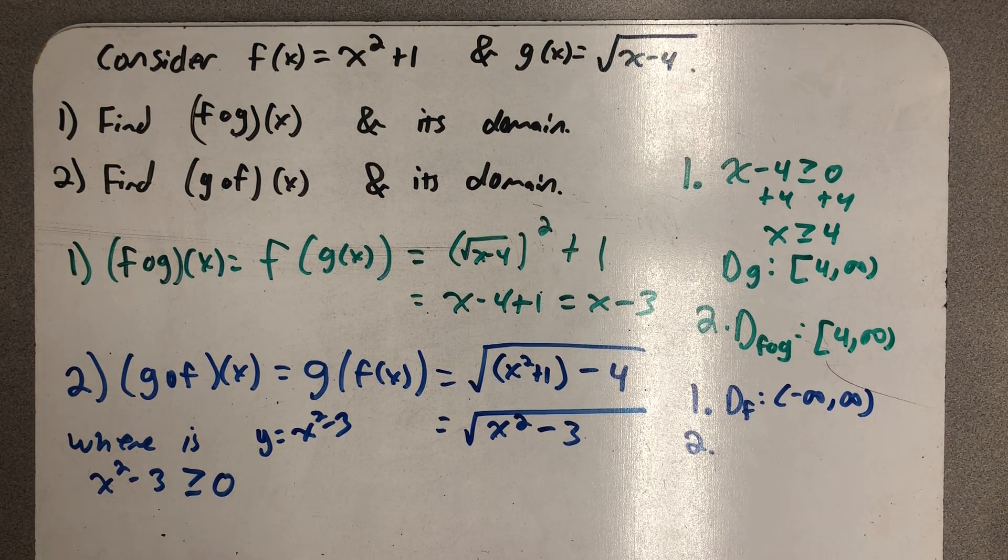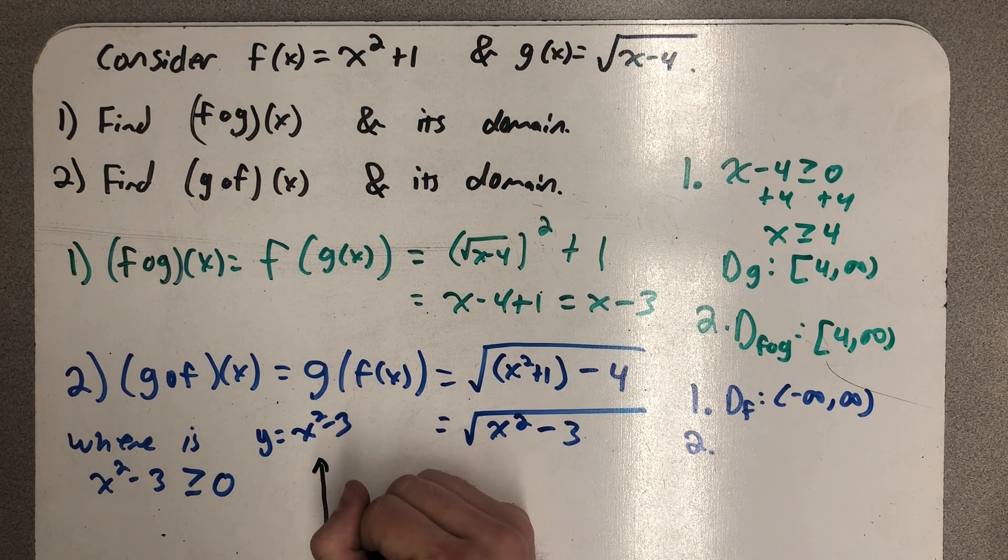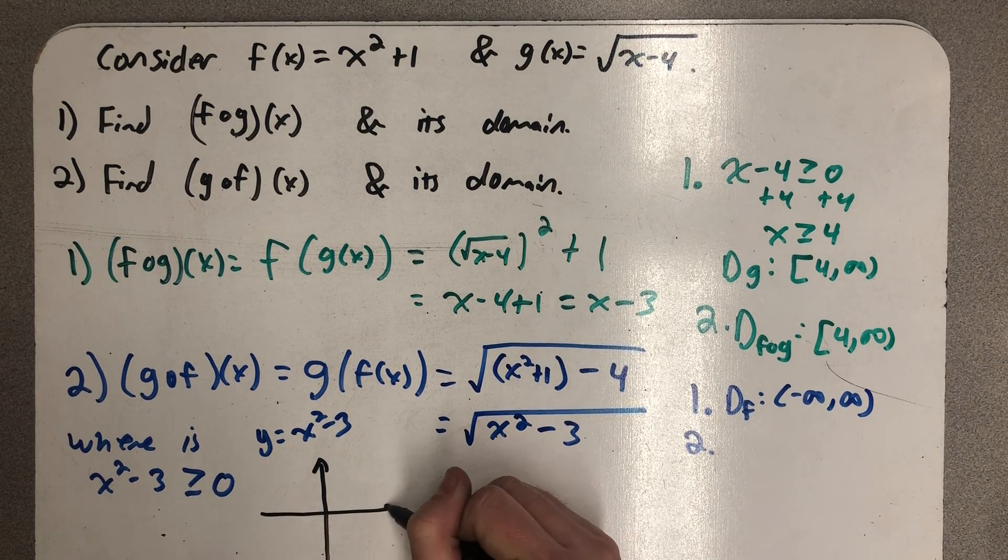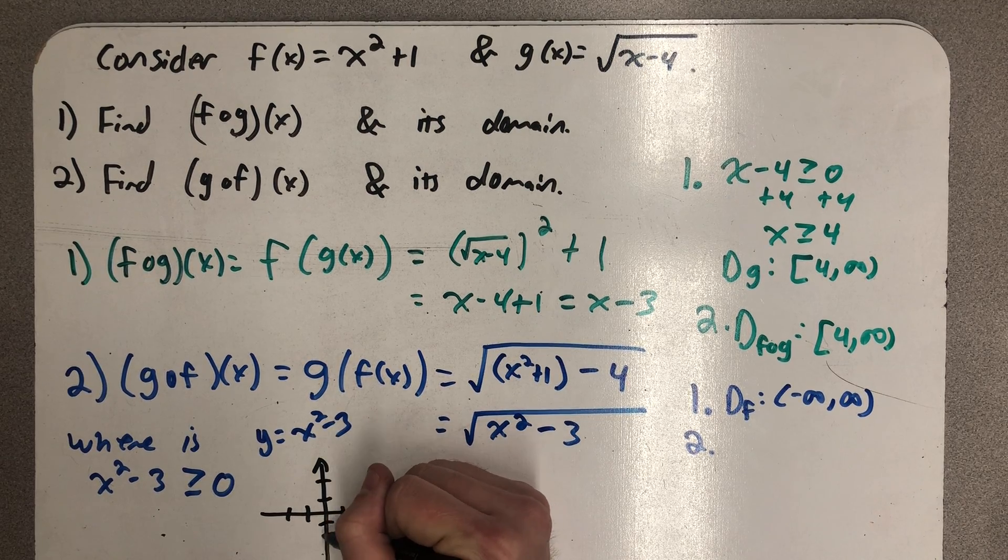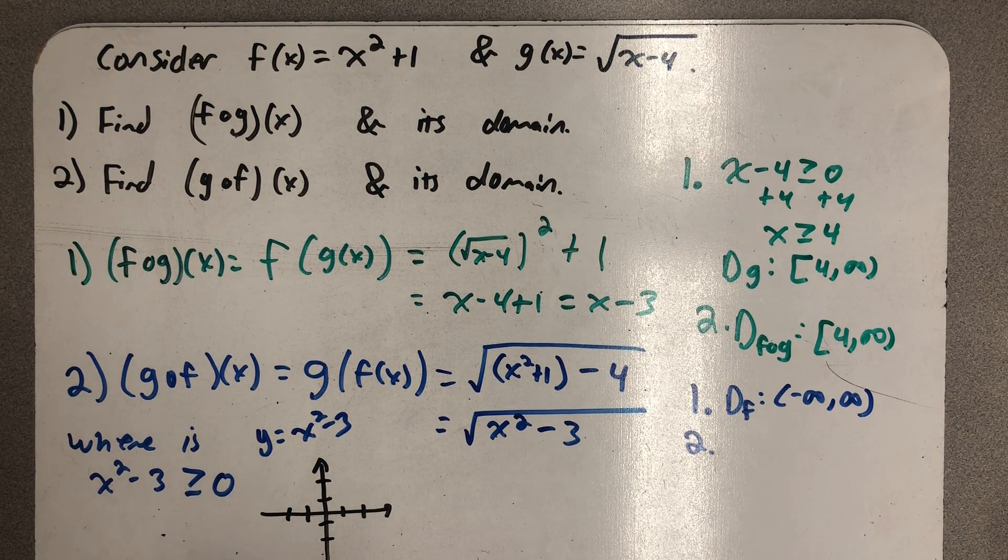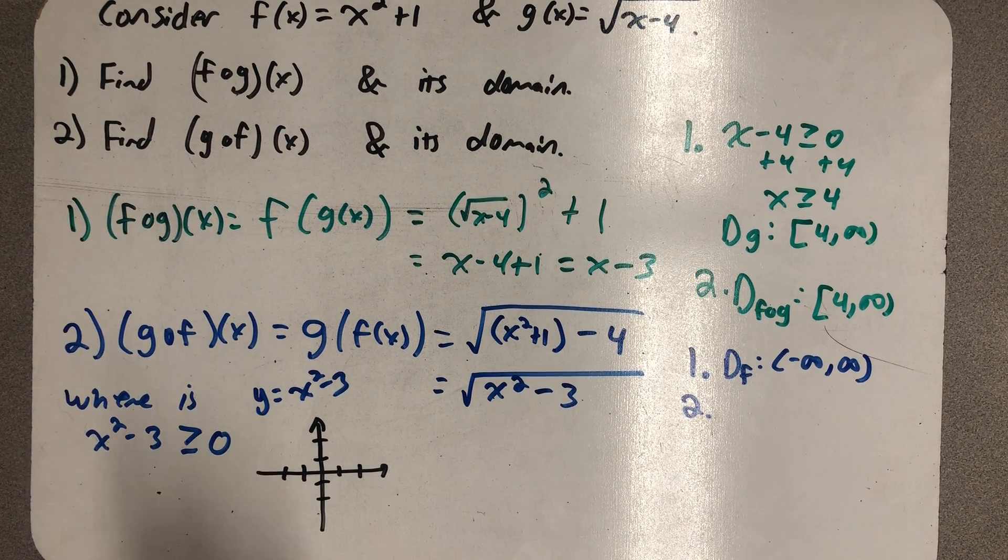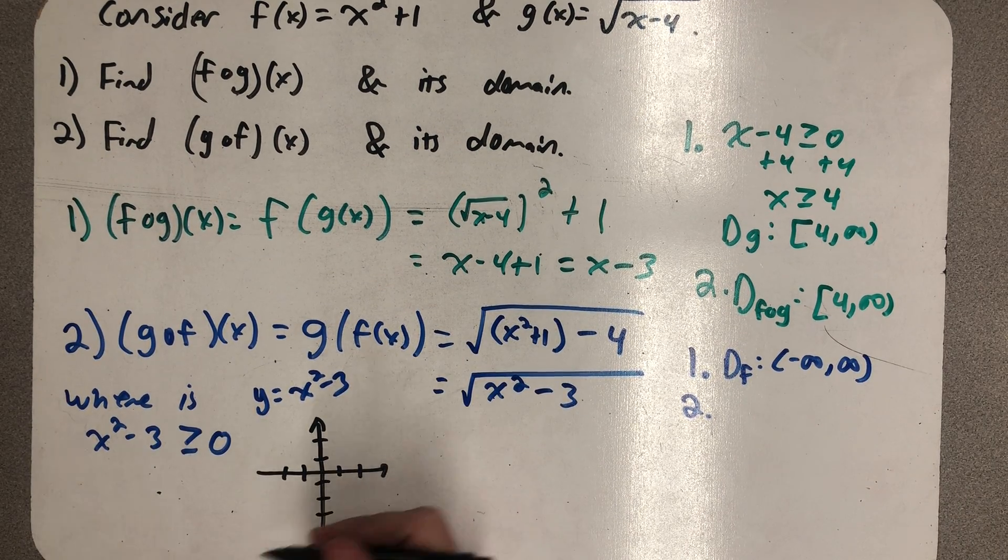But I'm going to think about the graph of y equals x squared minus 3 to answer this. Because we've been graphing functions for a while now. And it's a neat trick sometimes to get some information from a graph. So I know that this would be my standard parabola, the standard quadratic function shifted down 3 units.